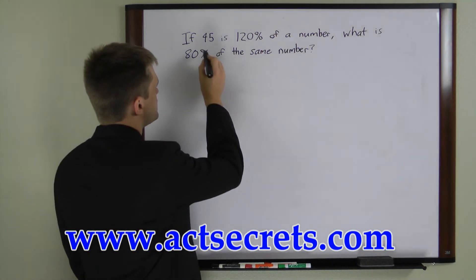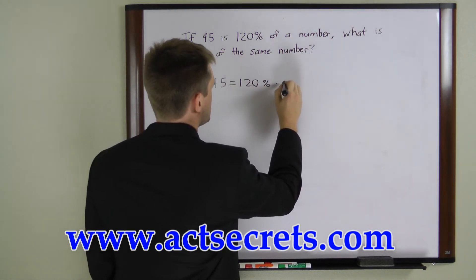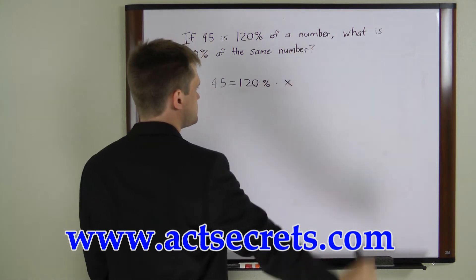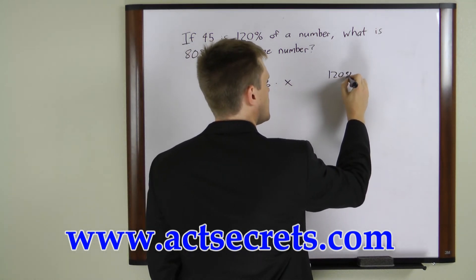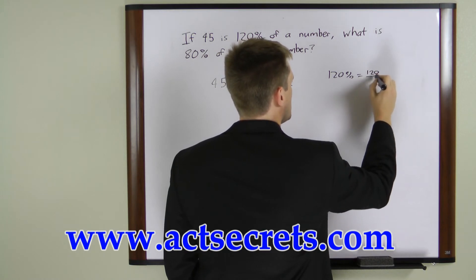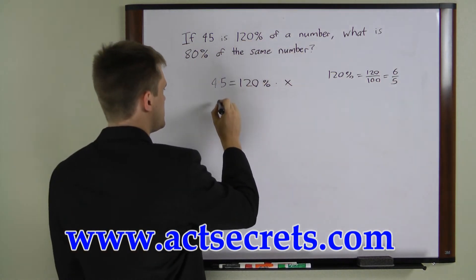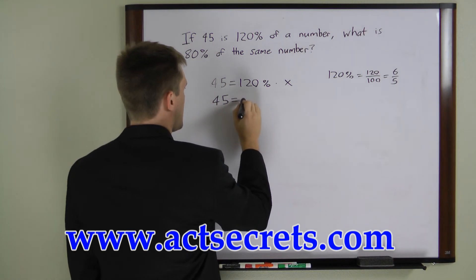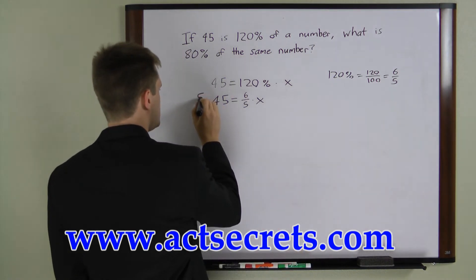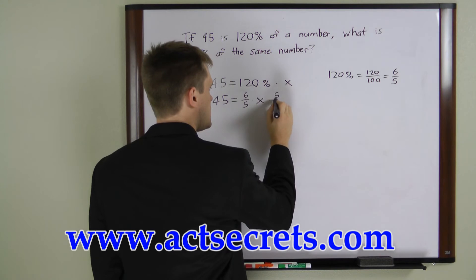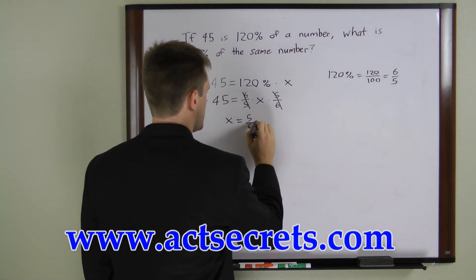Let's write the first one: 45 equals 120% times a number — we'll call that number x. To solve this, we want to convert 120% to a fraction. 120% is 120 over 100, which is the same as 6 over 5. Substituting that in, we get 45 equals 6 over 5 times x. Multiplying both sides by 5 over 6 gives us x equals 5 over 6 times 45.